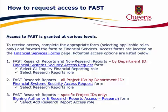Option 2: to request access to FAST Research Reports for all Project IDs by Department ID, complete the Financial Systems Security Access Request Form and select the Research Reports role. Option 3: to request access to FAST Research Reports for specific Project IDs only, complete the Signing Authority in Research Reports Access form and select the Add Research Report Access role.